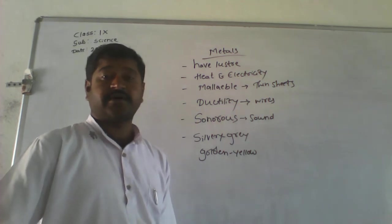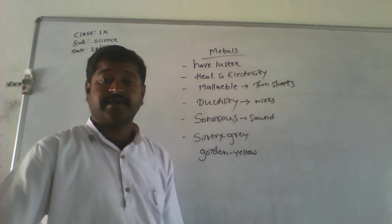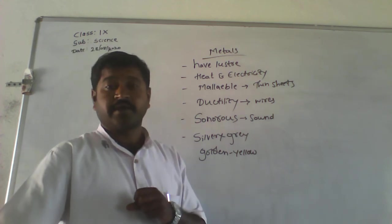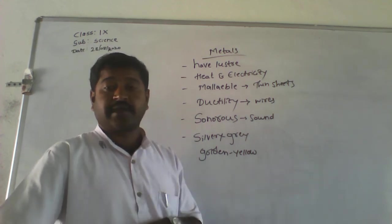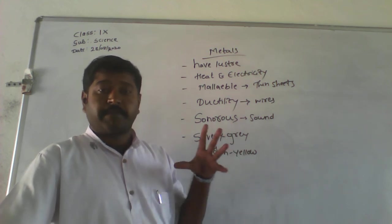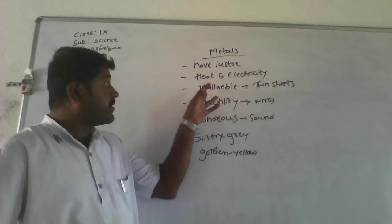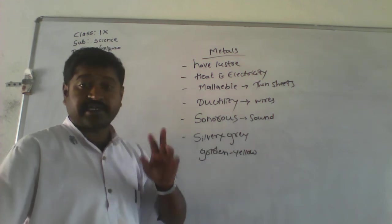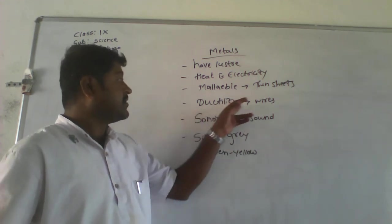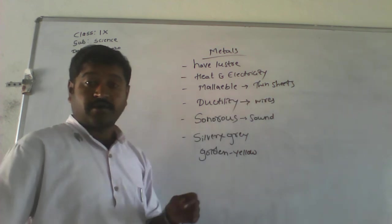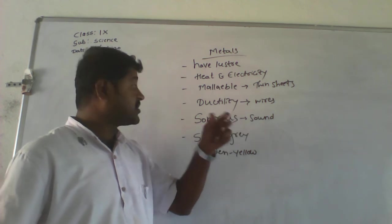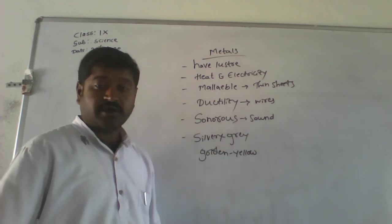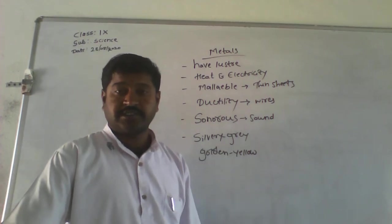So these are the properties of metals: metals have lustre — they have shininess; they conduct heat and electricity; they are malleable — they can be drawn into thin sheets; they are ductile — they can be hammered into wire shape; metals are sonorous in nature — they produce sound when hit; and they have silver-grey or golden yellow colour.